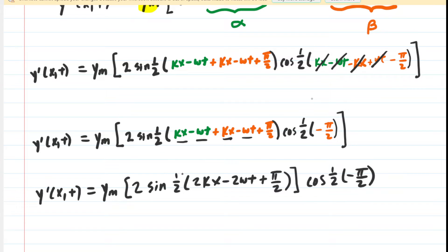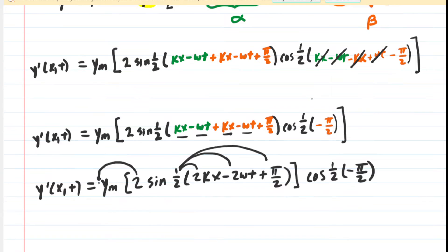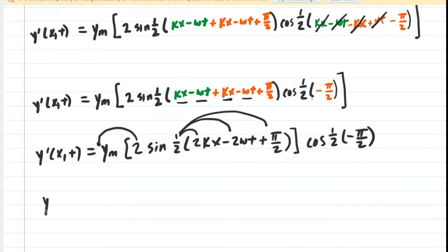We can clean this up further. What we're going to do is distribute this 1/2 into the parentheses. In addition, we can actually factor this 2 out in front. So we'll do a couple of moves at once here. This gives us the following equation. We're going to put that 2 in the front, so we have 2y_m. And then after distributing that 1/2, we're going to have the sine of just kx - ωt and then plus π/4.